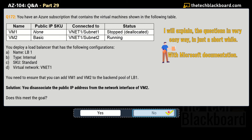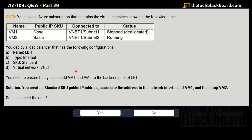Here comes the third variation, question 173. The solution says: you create a Standard SKU public IP address, associate the address to the network interface of VM1, and then stop VM2. Does this solution meet the goal? Once again this is an incorrect solution, so No is the correct answer.